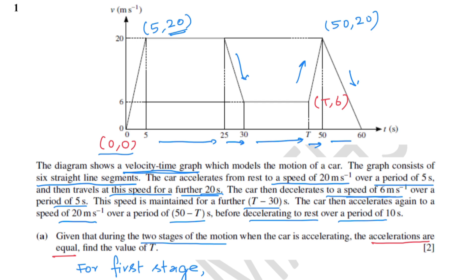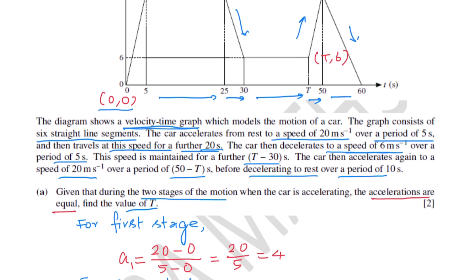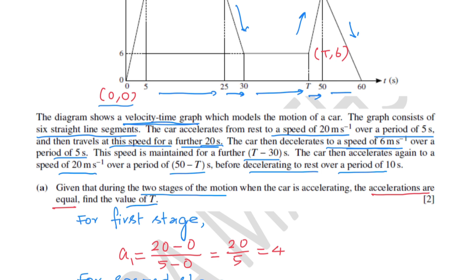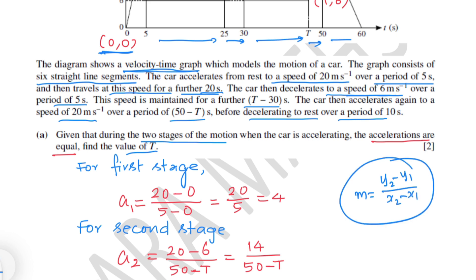Given that during the two stages of motion when the car is accelerating the accelerations are equal, find the value of t. For the first stage, acceleration equals the gradient. From the origin (0, 0) to the point (5, 20), the gradient is 20 minus 0 over 5 minus 0, which gives 20 over 5, that is 4. So the acceleration in the first stage is 4 meters per second squared.